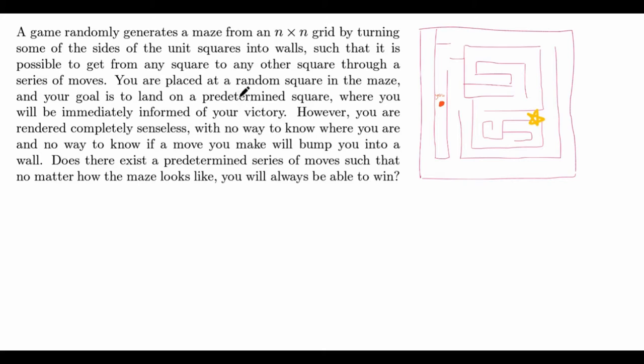Let's first read the problem. A game randomly generates a maze from an n-by-n grid by turning some of the sides of the unit squares into walls such that it is possible to get from any square to any other square through a series of moves.